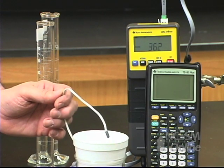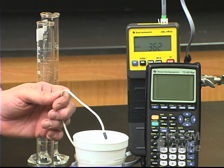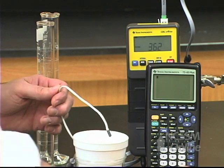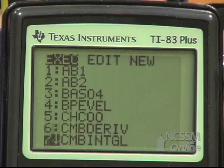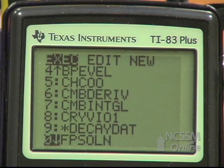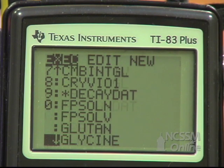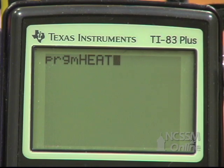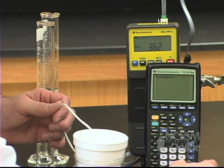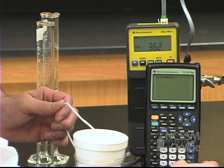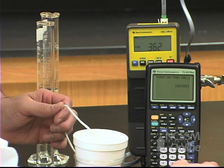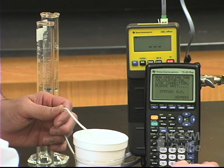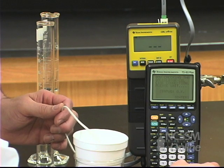We're going to measure the change in temperature using a CBL probe. We're going to use the program heat on your calculator. To start the program, press program on your calculator. Arrow down until the program heat is highlighted. Press enter. It's going to tell you it's going to run the program heat. It's checking to make sure you've turned on the CBL and that the connections are correct.